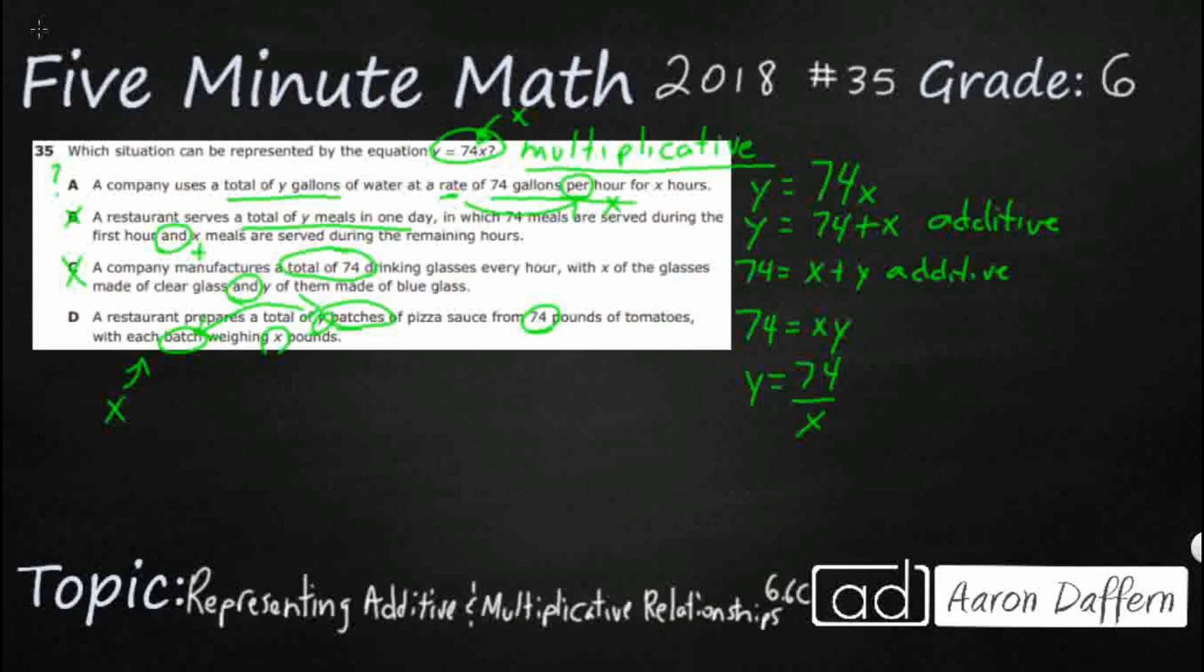But either way, whether you look at it like this or whether you look at it like this, they both mean the same thing. That is definitely not what we're looking for. And so our answer is that's going to be y equals 74x.